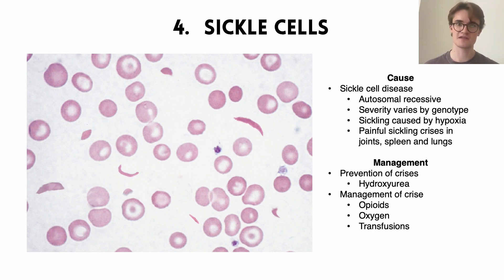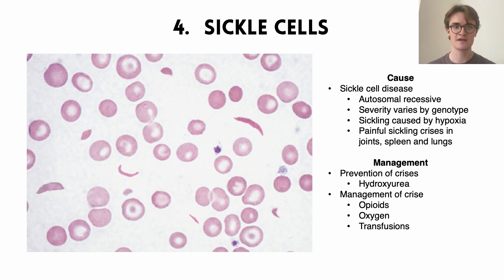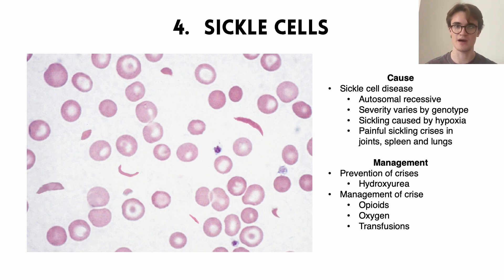To manage sickle cell disease, we first want to prevent sickling crises by giving hydroxyurea, a drug which increases the amount of fetal haemoglobin — a haemoglobin type with a different morphology to dysfunctional adult haemoglobin — thereby reducing the likelihood that hypoxia triggers sickling. When patients do get crises, management includes good analgesia (normally opioids, as it's very painful), oxygen (as sickling in the lungs can cause significant hypoxia), and transfusions if significant anemia has developed.